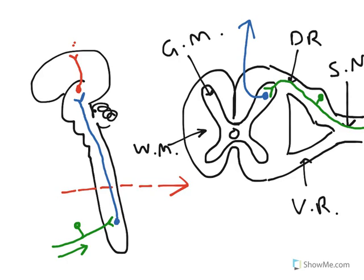In orange I am going to draw the cell body of a motor neuron there, in the ventral horn of the grey matter of the spinal cord. So this is a motor neuron in the spinal cord. And this is the neuron that sends its axon out through the ventral root, into the spinal nerve, and ultimately to a muscle, say in one of the limbs.